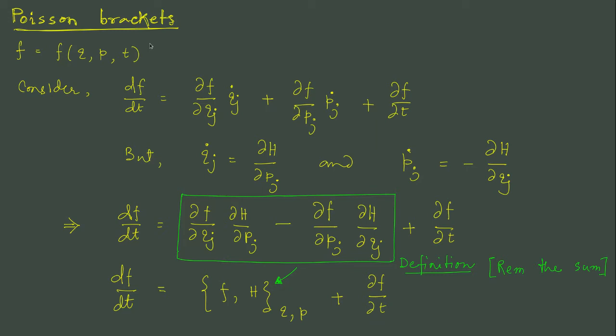We now define the Poisson bracket. Let us suppose we have a dynamical quantity which is a function of the generalized coordinate, generalized momenta and time. By dynamical quantity, I mean any function of Q, P and T, for example Hamiltonian. It could be angular momentum, a component of angular momentum or linear momentum. In general, any function of Q, P, T we consider to be a dynamical variable or dynamical quantity. We are interested in the total time derivative of the dynamical quantity. How does it change with time?